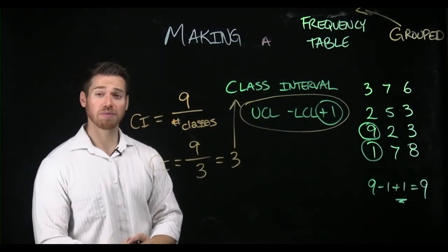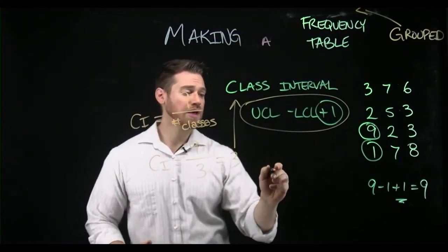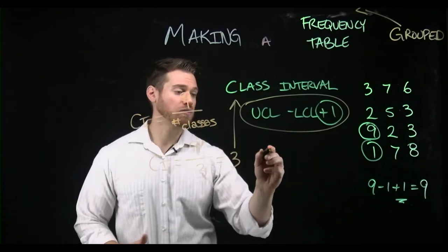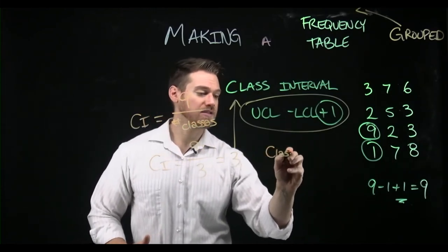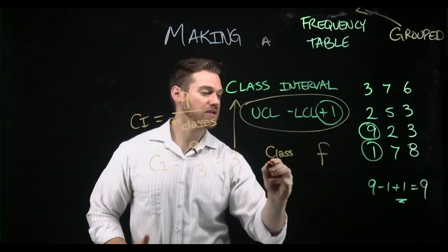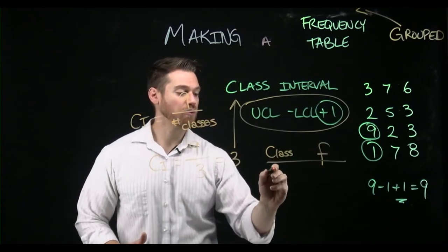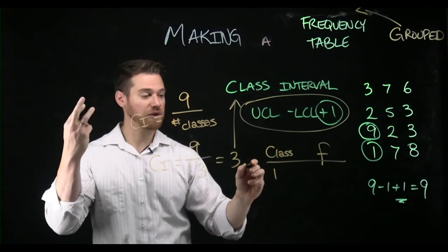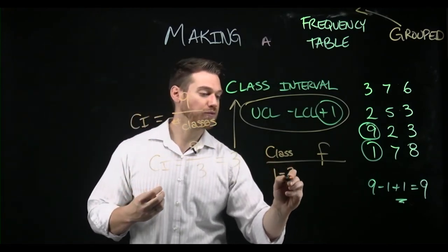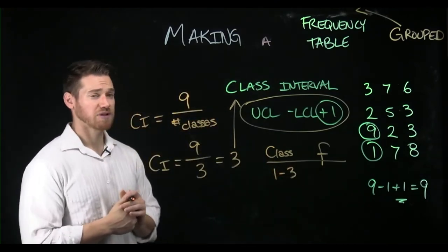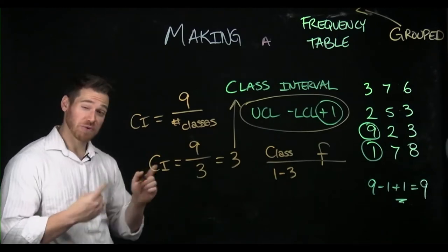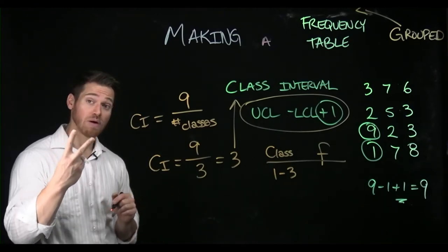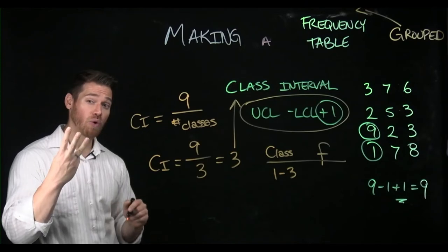If my class and my frequency in my table here, the first class would go one, two, three. One through three is my first class. What's three minus one? Two, plus one, three. What is the width of that class? Three. My second class would then go from four to six and then from seven to nine.